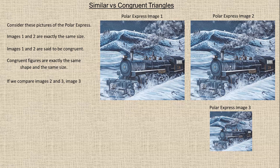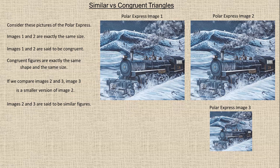Now if we compare images two and three — or one and three, it doesn't matter — number three is a smaller version of image two. We could say it's a reduction, or we could say image two is an enlargement compared to three. So these are similar figures. Similar figures are the same shape but usually different sizes.